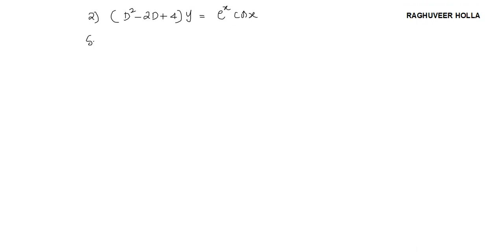Let us find the auxiliary equation corresponding to this: that is m squared minus 2m plus 4 is equal to 0.